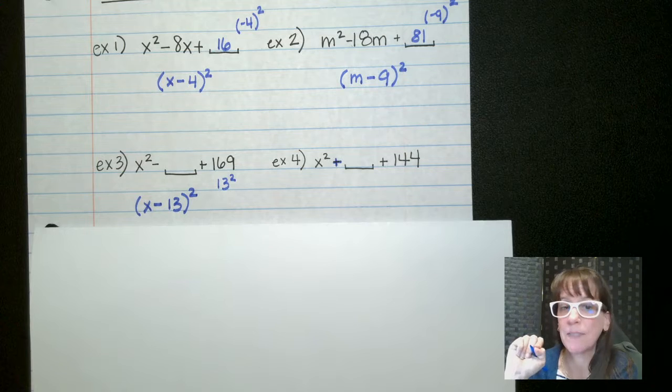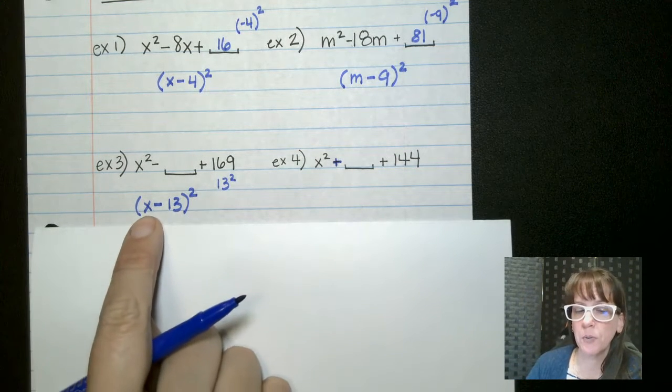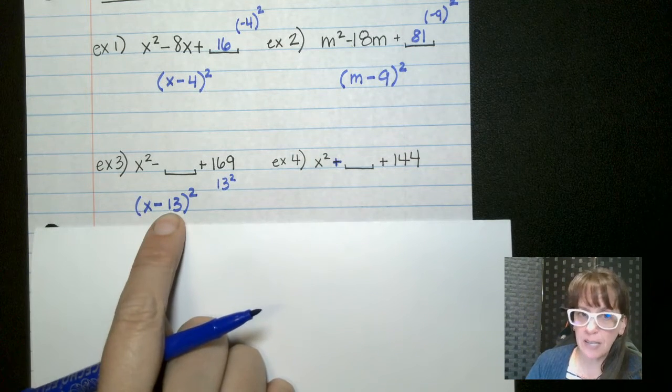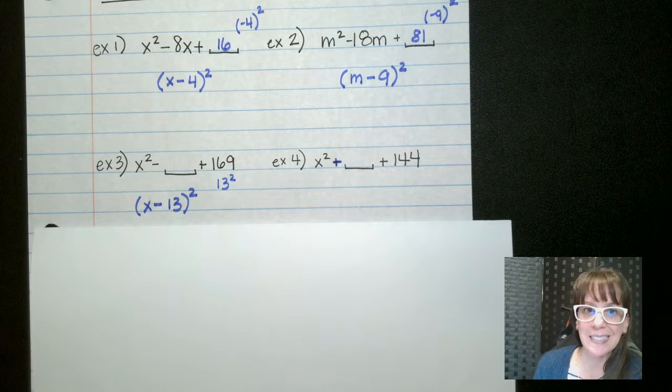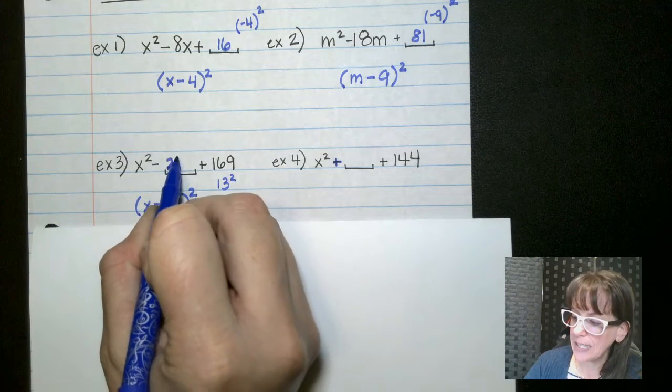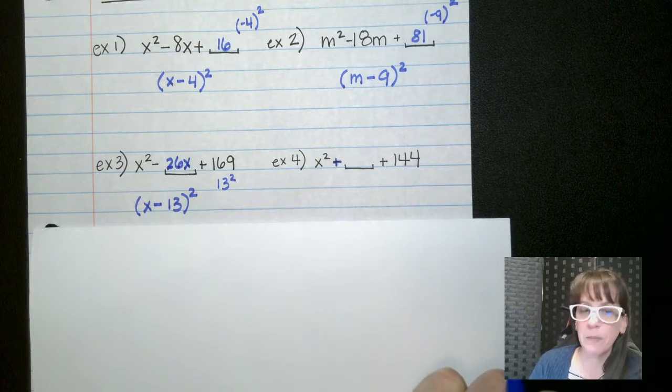Now remember, our test to see if this is a perfect square trinomial is to multiply these two things together. So 13x and double it, 13 doubled would give us 26x. That needs to go in here for this to be a perfect square trinomial.